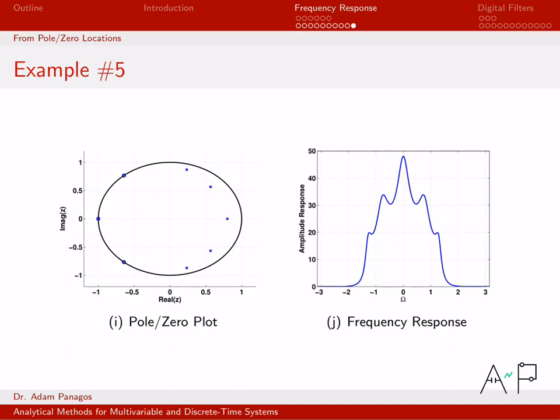All right. So that's a nice little sequence of examples. We walked through how do you place poles and zeros on the complex plane and how does that change the amplitude response of the system? It changes it in terms of the distances to those poles and zeros. The numerator has distances to zeros. The denominator has distances to poles. So as you get close to a pole, you tend to have peaks. As you get close to a zero, you have zeros.